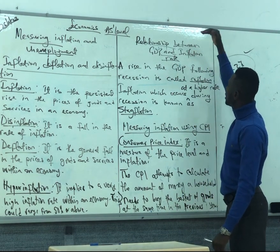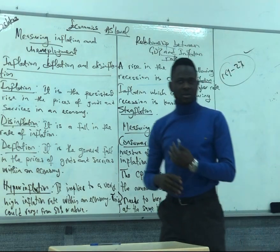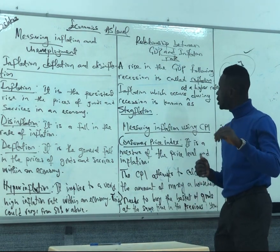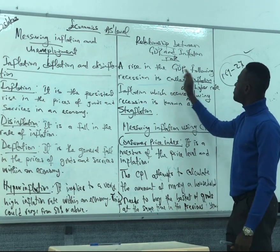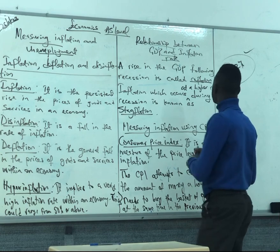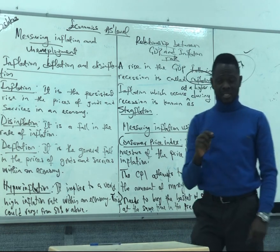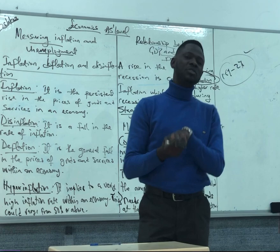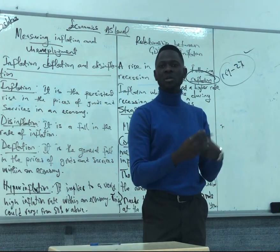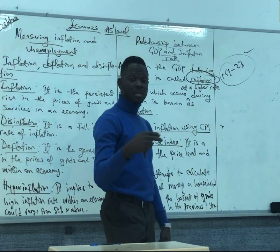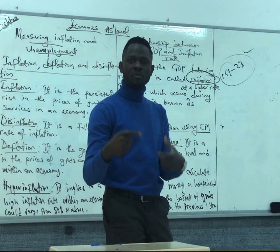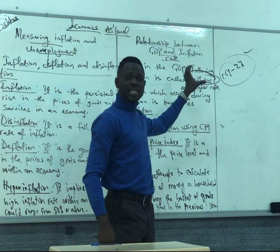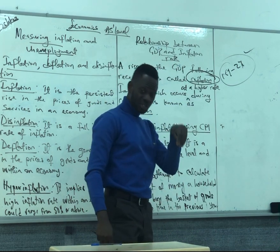Then we go to the relationship between GDP and inflation rates. GDP is the measurement of a country's output, which is the same as national income. A rise in the GDP following recession is called reflation. Reflation means that the GDP of a country is increasing following a recession. Recession means there is a decline — a negative economic growth for two consecutive quarters, a decline in economic activity. So if there is a decline in economic activity and at the same time the GDP of the country is increasing, we call it reflation.